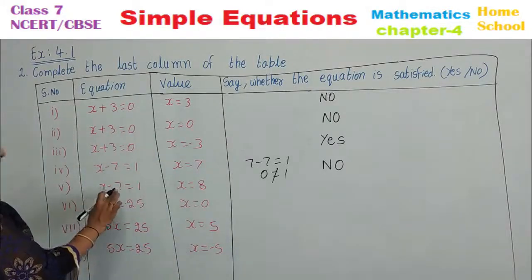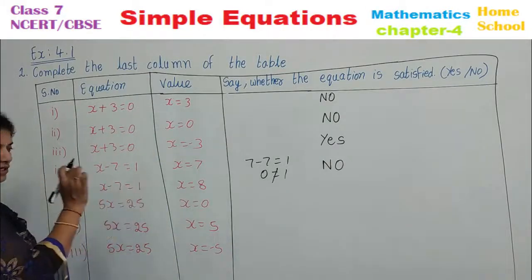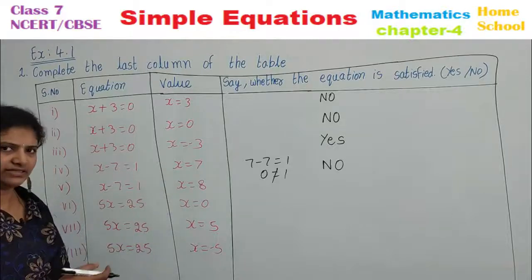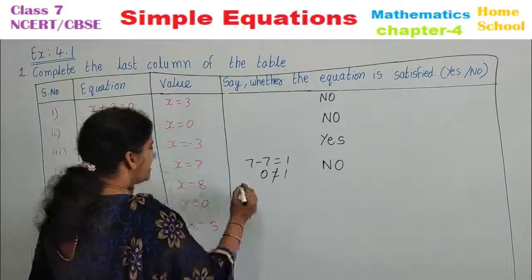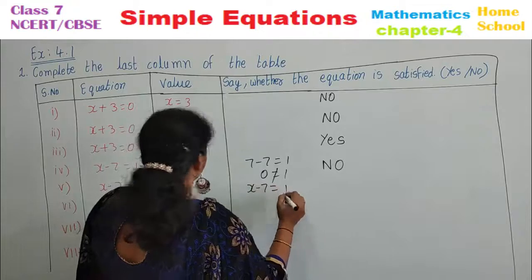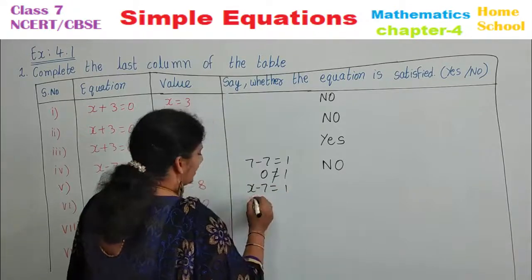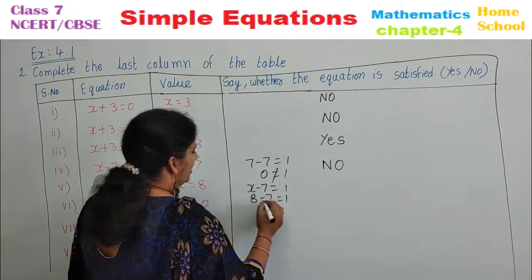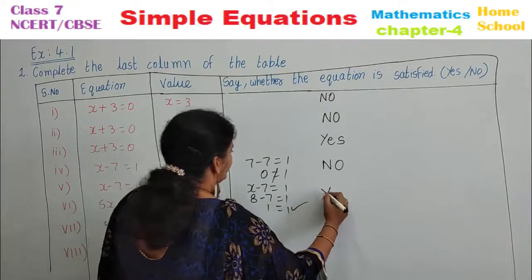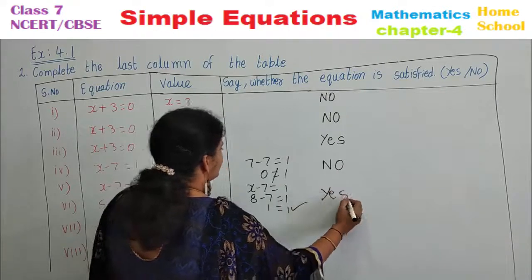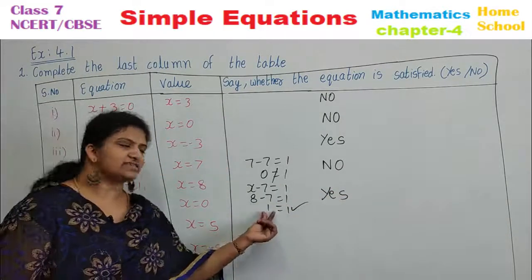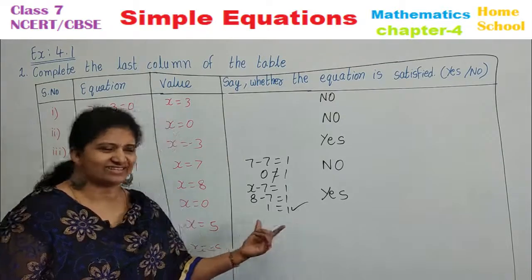Next: x minus 7 equals 1 if x equals 8. Substitute 8 into the equation: 8 minus 7 equals 1, and 1 equals 1. Yes — it is satisfying. LHS is equal to RHS.